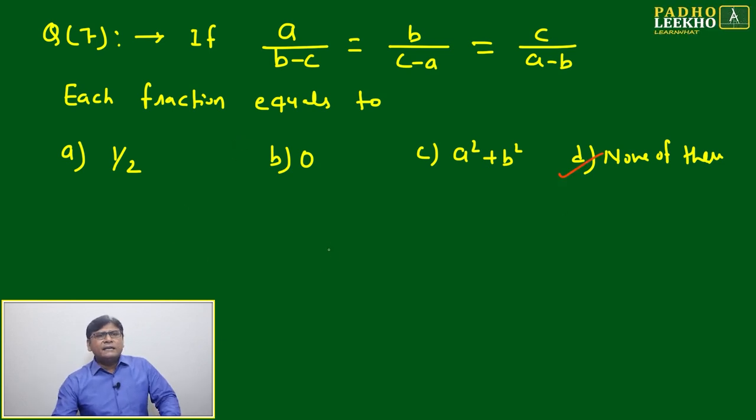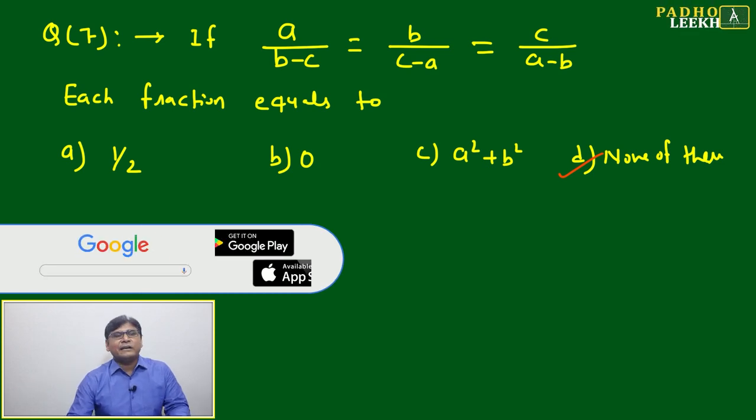Directly I can mark this one because no need to work through it. Once it is given minus, minus, minus - if we will add, then what will happen? It will be cancelled out and directly you can mark 'none of these'.